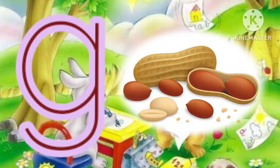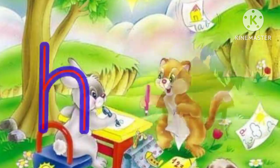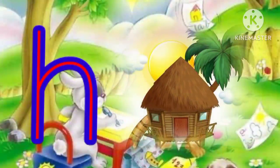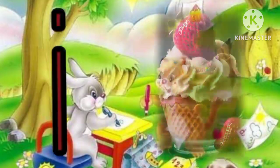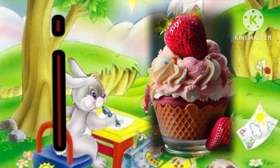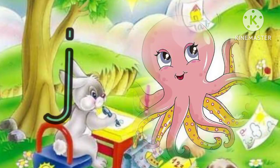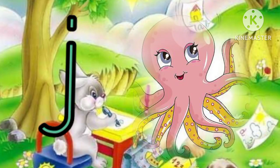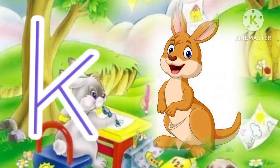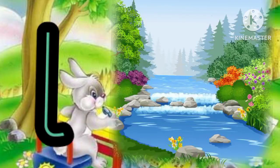G for groundnut, H for hut, I for ice cream, J for jellyfish, K for kangaroo, L for lake.